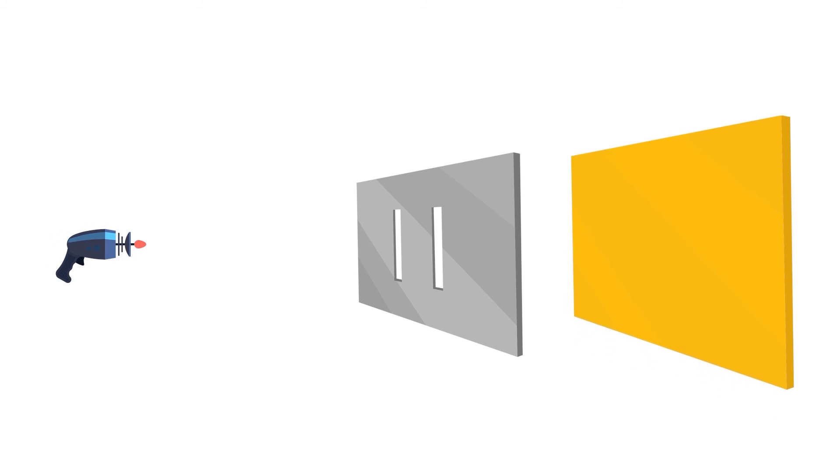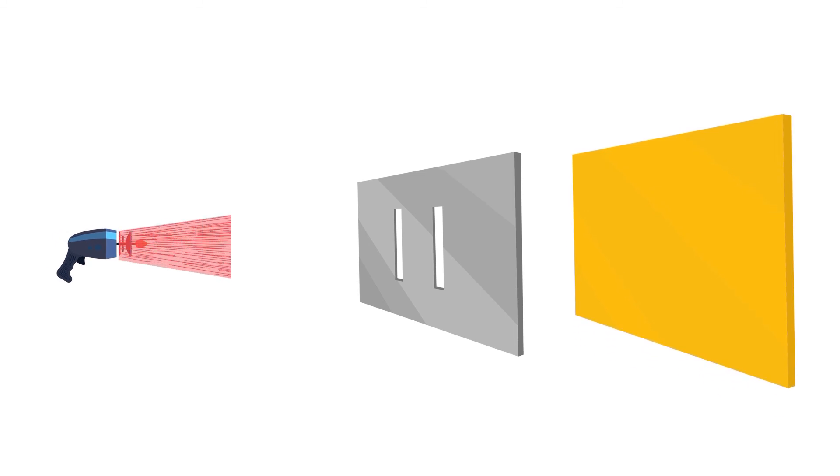To do this, he used a barrier with two slits in it and placed a target behind that barrier. He used a light source to shoot a beam of light at the barrier and then looked at the pattern on the target behind.